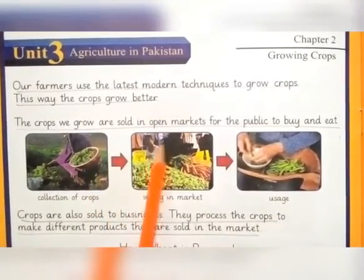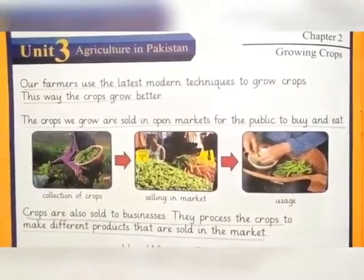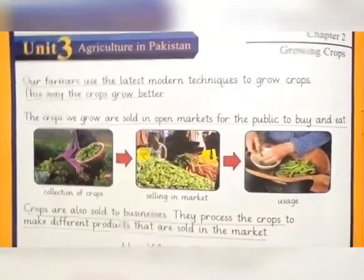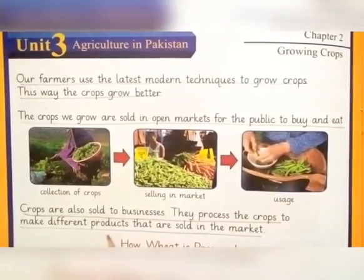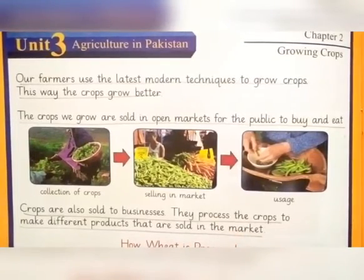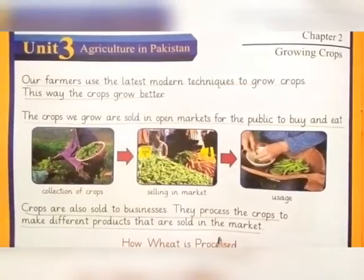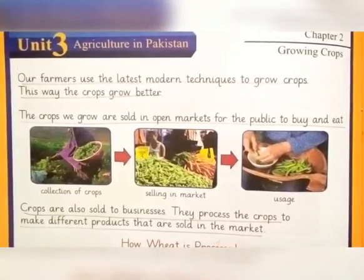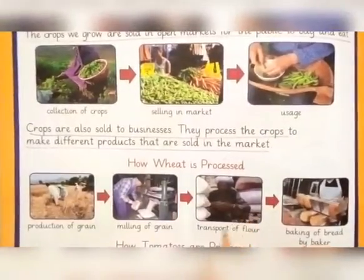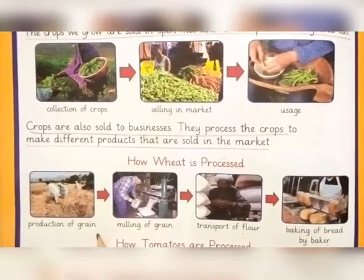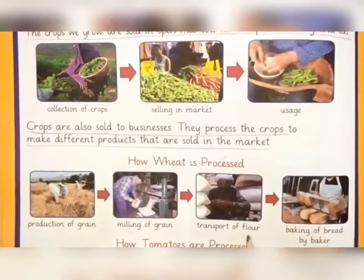The crops we grow are sold in open markets for the public to buy and eat. Crops are also sold to businesses — they process the crops to make different products that are sold in the market. How wheat is processed: production of grain, mining of grain, transport of flour, baking of bread by bakers.